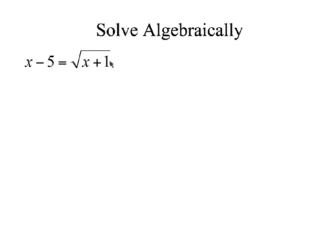All right, we're going to solve this algebraically. To get rid of this square root, you need to square both sides. So what I'm going to do is, just what I just said, going to square both sides.